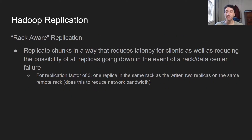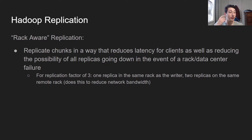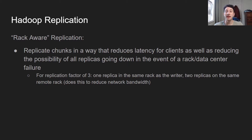Replication in Hadoop is something called rack-aware, and this is really important because it allows for both maximizing availability and throughput. Chunks are replicated in a way that not only reduces latency for clients, but also reduces the possibility of all the replica nodes going down because they're put in a different rack or data center. For the default replication factor of three, Hadoop puts one replica on the same rack as the writer and then two replicas on the same remote random rack. The reason they put two on the same random rack is just to minimize network bandwidth — since we have synchronous replication where we wait for all writes to complete, it's important that all replicas complete their write as fast as possible. It's not eventually consistent.